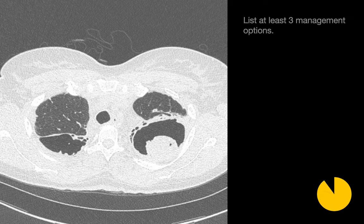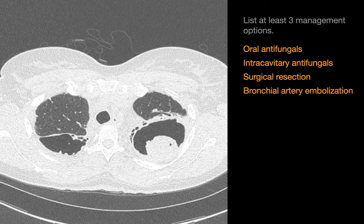List at least three ways a mycetoma may be managed. Oral antifungals can be tried, but may be of limited use as it can be difficult for the antifungal to make it inside the cavity. Intracavitary injection of an antifungal like amphotericin by interventional radiology is an option, as is surgical resection. In cases of acute massive hemoptysis from a mycetoma, bronchial artery embolization may be performed by interventional radiology.